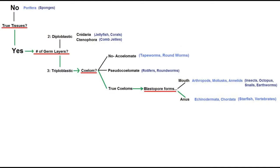Next, imagine sticking your thumb into a tennis ball — that's the shape of an early developing embryo, and the thumb indentation is called a blastopore. In organisms like insects, it forms the mouth. You will never find an insect where the blastopore forms the anus, or one without a coelum, or one with two germ layers, or one without true tissues. For starfish invertebrates, the blastopore forms the anus.